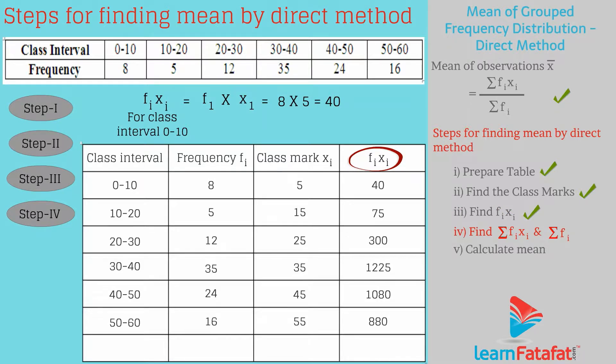Step 4: Find summation of fixi and summation of fi. Summation of fixi gives value 3600 and summation of fi gives value 100.